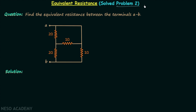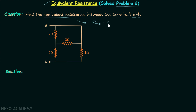We will take problem number two of equivalent resistance. In this problem we are required to find the equivalent resistance between terminals A and B. We want to replace the combination of four resistors by a single resistor — let's say its resistance is equal to R_AB — and this is our equivalent resistance that we want to calculate.